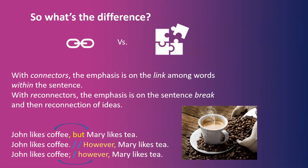So what's the difference? With connectors, the emphasis is on the link among words within the sentence. With reconnectors, the emphasis is on the sentence break and then reconnection of ideas. For example: 'John likes coffee, but Mary likes tea' — these words are closely linked. Versus 'John likes coffee. However, Mary likes tea.' A semicolon is kind of between a comma and a period — it means there is a break, but it's a weaker break within the sentence.